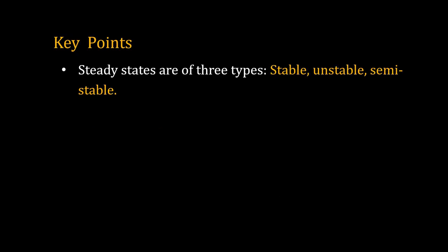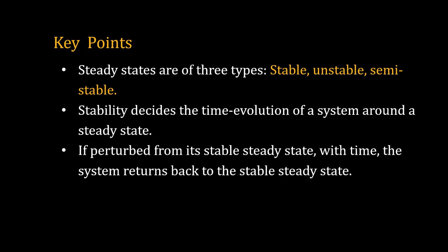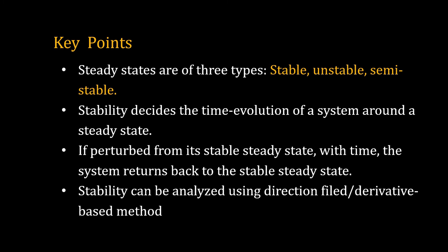Here are the key points of this lecture. For a one-dimensional system, steady states are of three types: stable, unstable, and semi-stable. Stability decides the time evolution of a system around a steady state. If we perturb the system from its stable steady state, with time the system will return to the stable steady state. You can identify the stability using the direction field or by using calculus. That's all for this lecture, thank you.